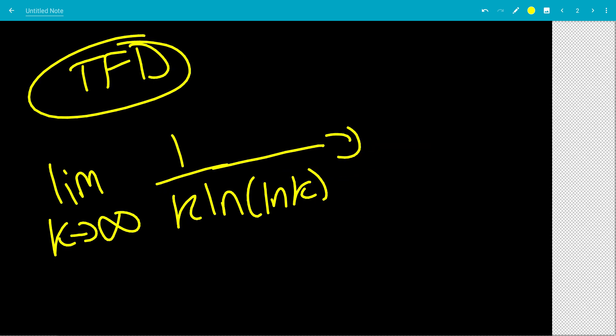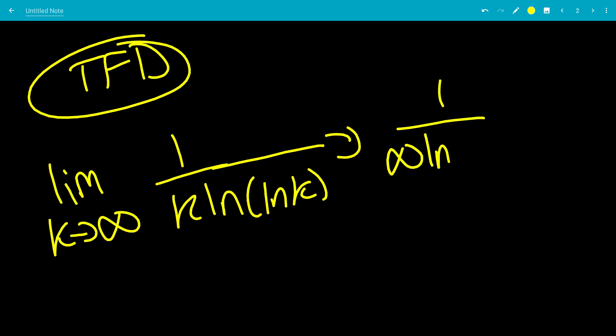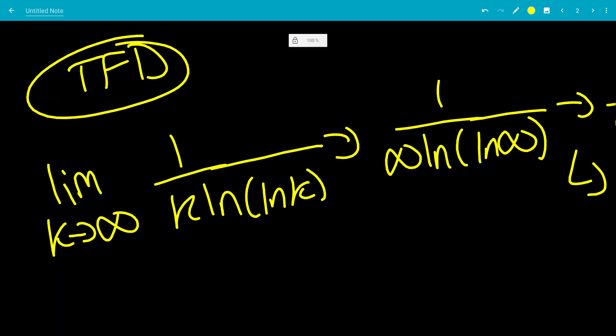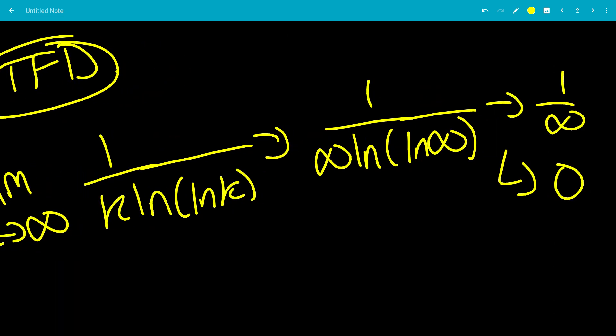So this goes to 1 over infinity times ln of ln of infinity. So this just goes to 1 over infinity, which goes to 0. But for the test for divergence, we can't use this because 0 doesn't show, it shows that we can't use this test.